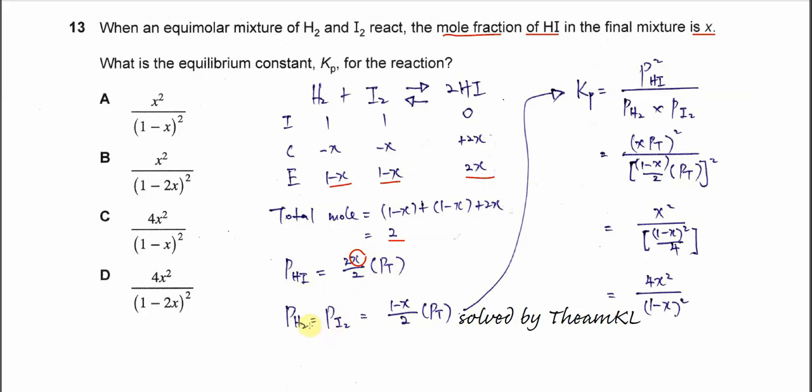And we do the same thing for the H2 and I2. So it's 1 minus X over 2 for the mole fraction of the H2 and I2. The mole of H2 and I2 is 1 minus X over 2 total mole, times the total pressure. Then you get the partial pressure for these two reactants.